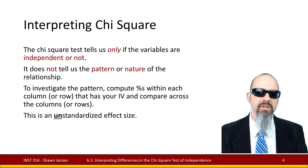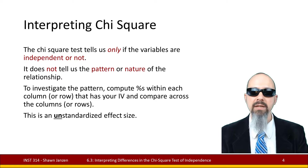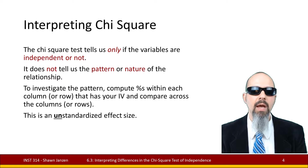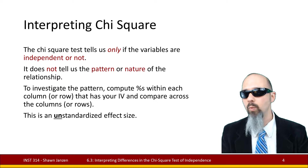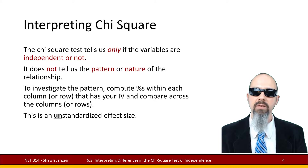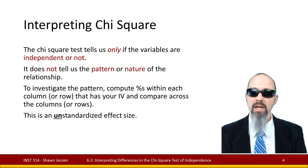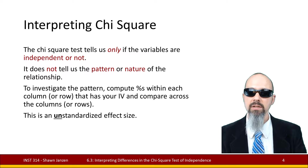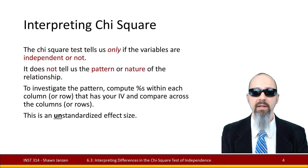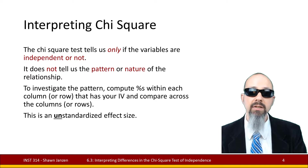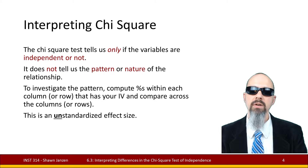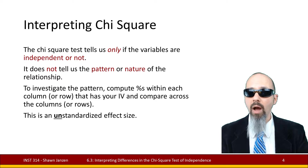The chi-square test tells us if your variables are independent or not with the test for independence. However, what it doesn't tell us is anything about the pattern or the nature of that relationship. To figure out something about the relationship or pattern, we can compute our frequencies into percentages and compare across rows or columns to see where distributions fall and which groups are larger or smaller. Note that this is what we call an unstandardized effect size — we cannot compare it to other chi-square results from other analyses.